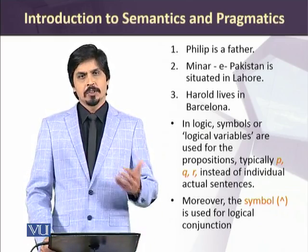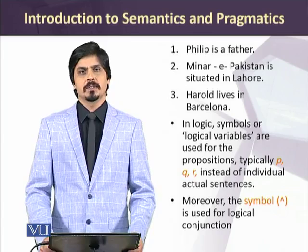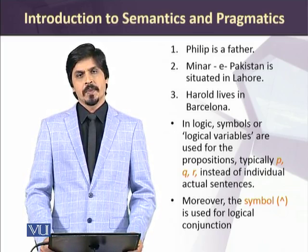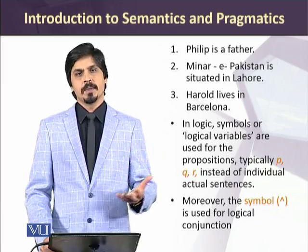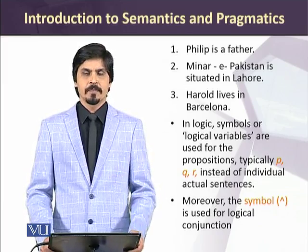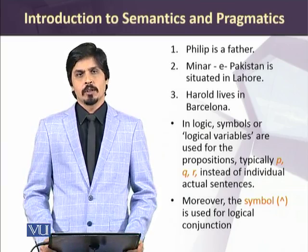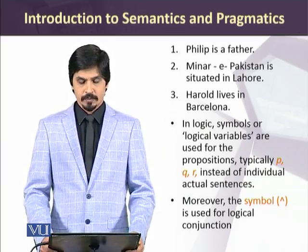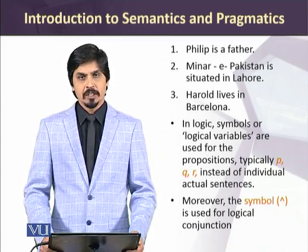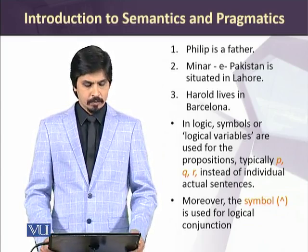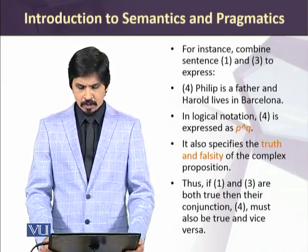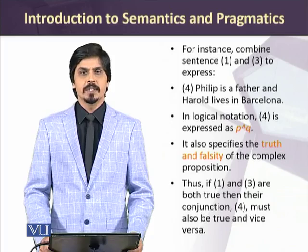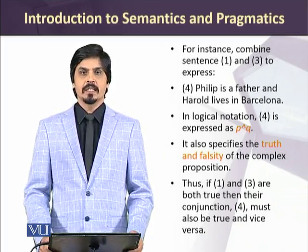In traditional logic, symbols are used to convey or express various propositions instead of writing complete propositions. For example, the usual symbols used are P, Q, and R. P can be used for the first proposition, then Q for the next, and R for the next. Similarly, some other symbols are also used to combine various propositions. The symbol at the bottom of this screen conveys a logical conjunction, which is used for the meaning of 'and,' where two similar ideas are combined.